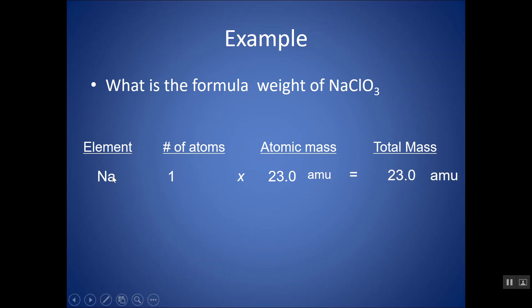Essentially, the entire mass of sodium is multiplying the number of atoms times the atomic mass I find on the periodic table, and I get that there's 23 AMUs of sodium in this formula. I do that for each element. There's one chlorine. If I look up the atomic mass, 35.5, so there's 35.5 AMUs of chlorine in this formula.